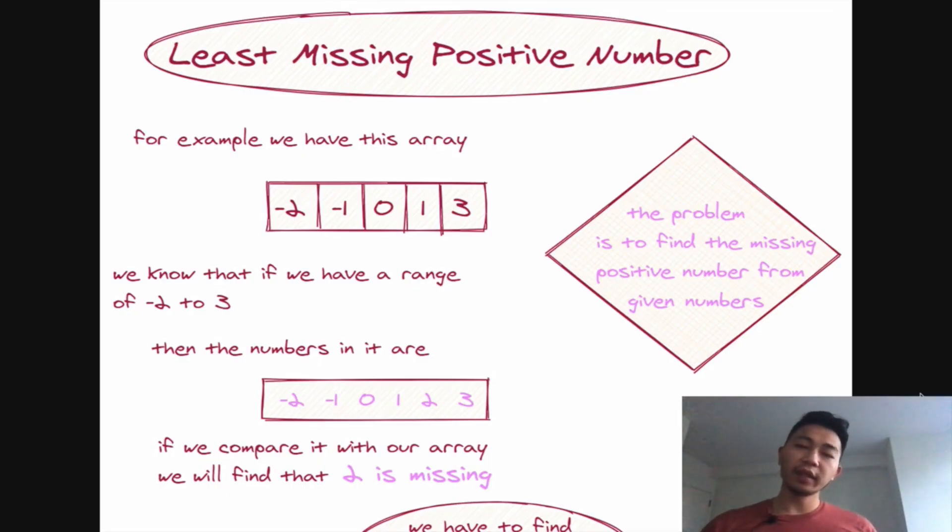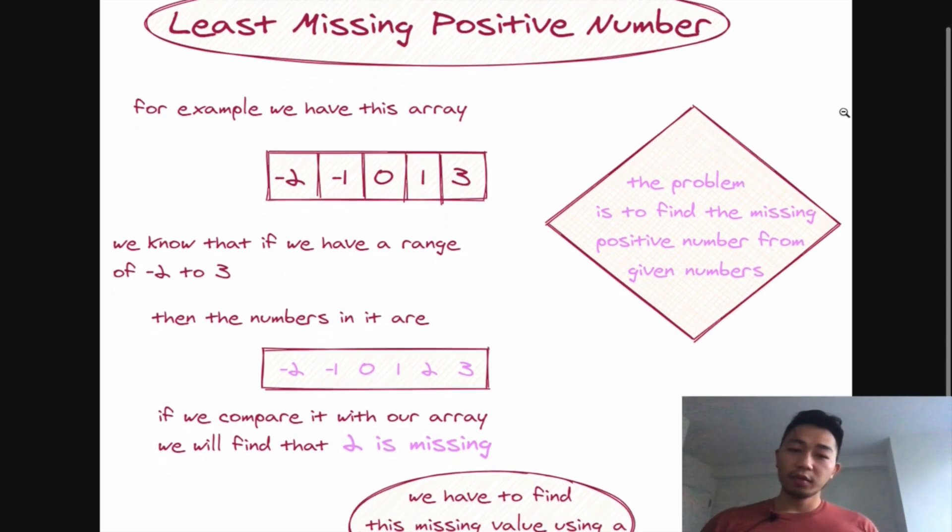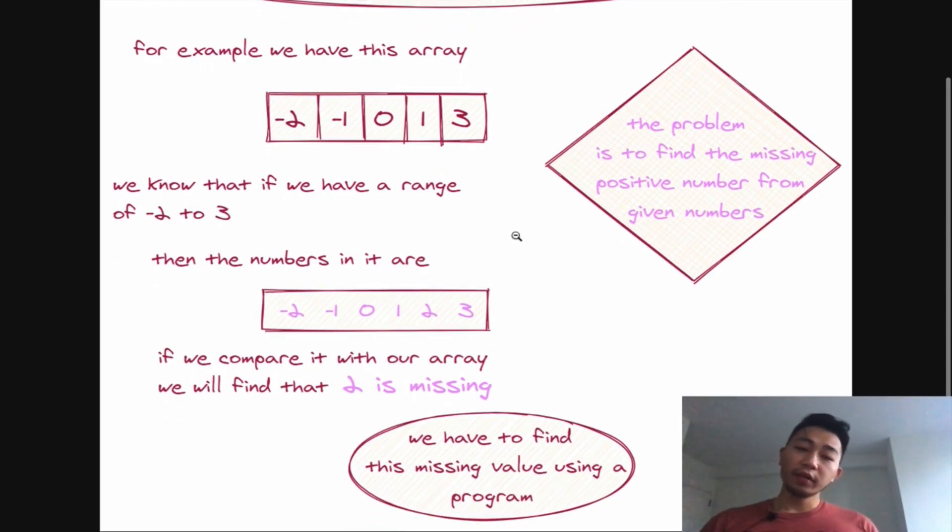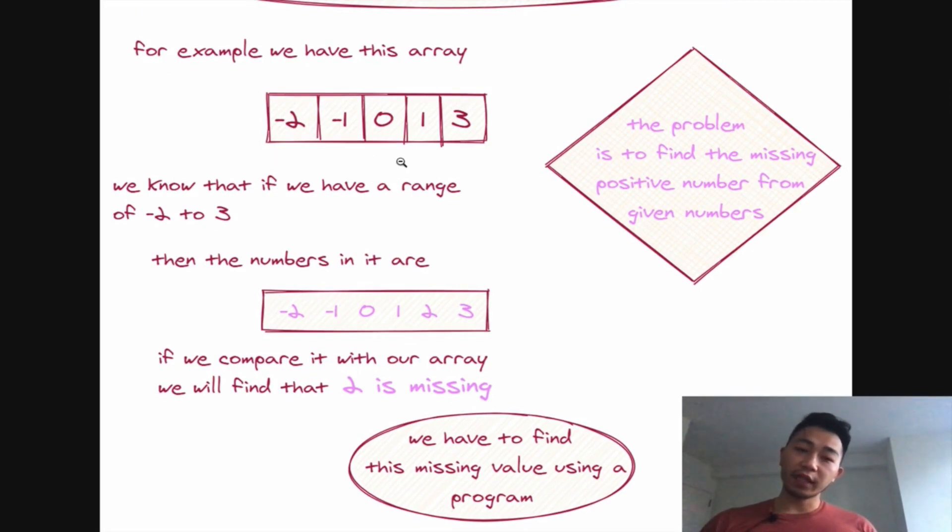Let's start building the intuition for how to solve this problem by examining how a sorted array could be processed in order to find the least missing positive number. So in this diagram that we have in front of us, we have this array that's sorted already, negative two, negative one, zero, one, and three. Now, we know that if we have this range from negative two to three, then the numbers in it are negative two, negative one, zero, one, two, and three, and two is the number that we're missing.